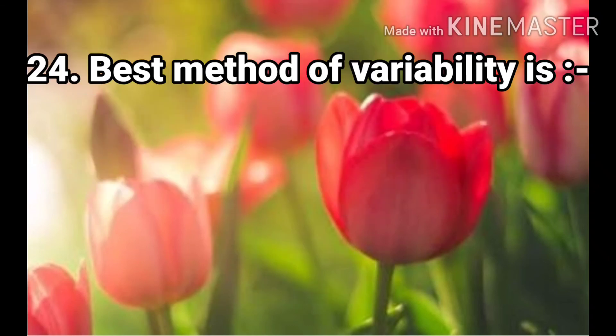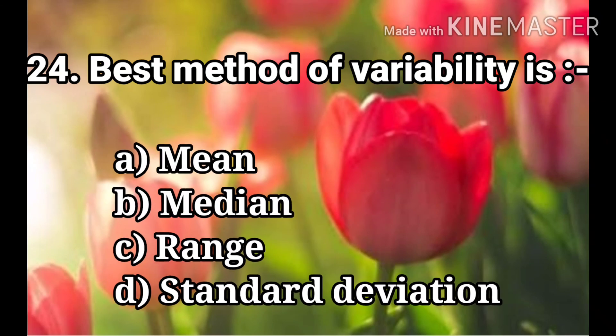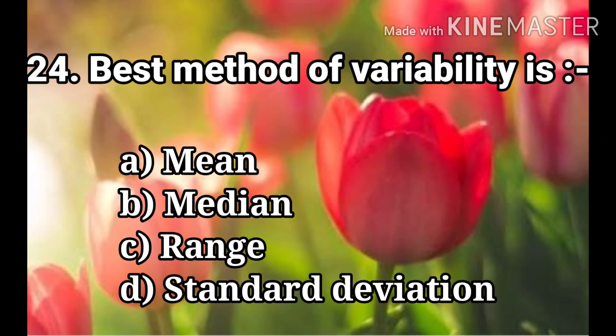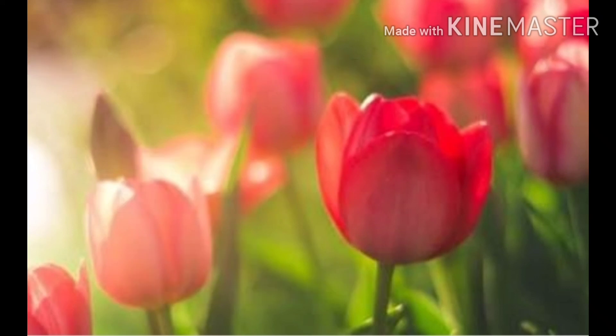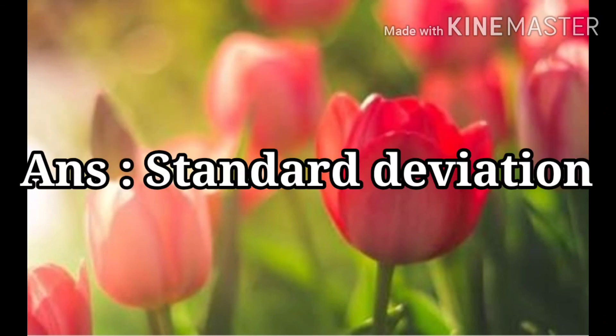Question 24: The best method of measuring variability is. The options are Mean, Median, Range, and Standard Deviation. The answer is Standard Deviation.